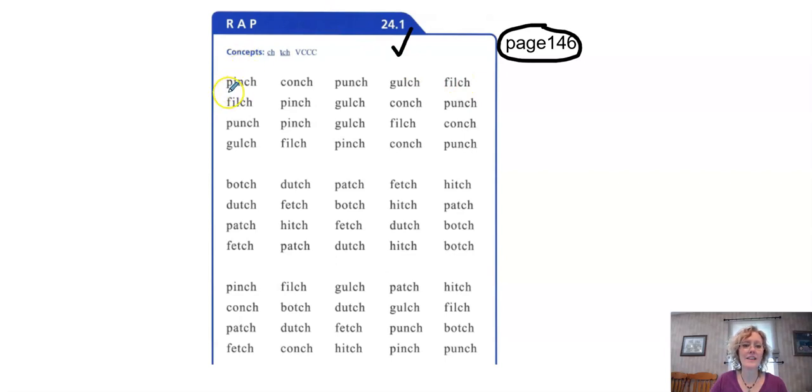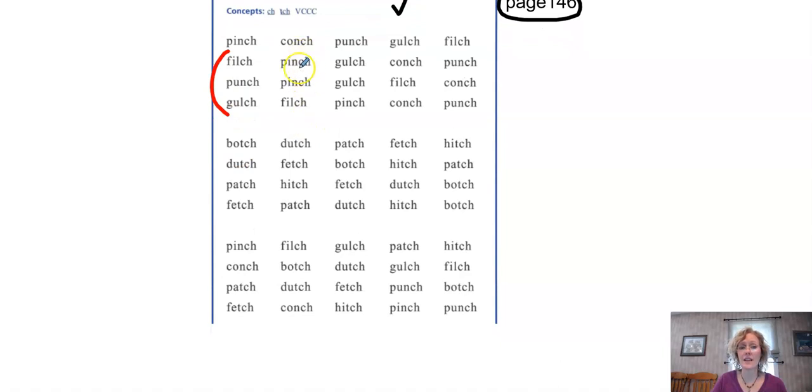Now you're going to read these to someone. That's your homework for the top section. Let's say the middle section. Echo: botch, dutch, patch, fetch, hitch. If you notice, the TCH will only make these five sounds: atch, etch, itch, otch, utch. If you hear any of those at the end of a one syllable word, it means you use TCH.